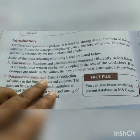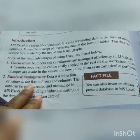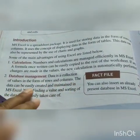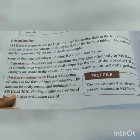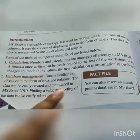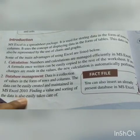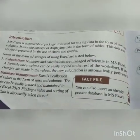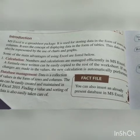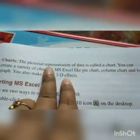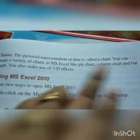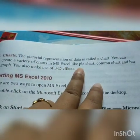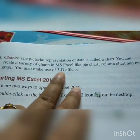Number two: Database management. Data is a collection of values in the form of rows and columns. The data can be easily created and maintained in MS Excel 2010. Finding a value and sorting of the data is also easily taken care of. Number three: Charts. The pictorial representation of data is called a chart. You can create a variety of charts in MS Excel like pie chart, column chart, and bar graph. You can also make use of 3D effects.